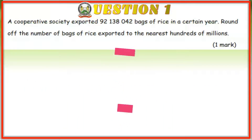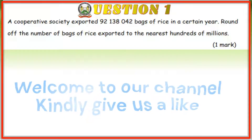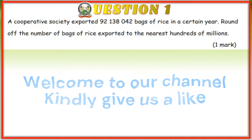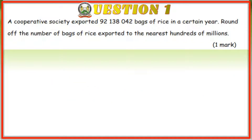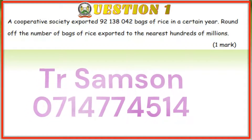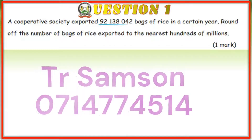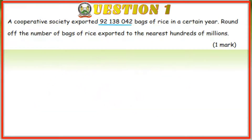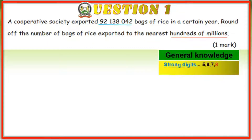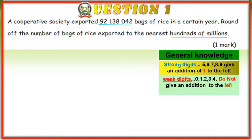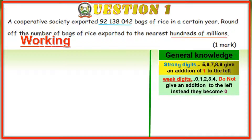Question one: a cooperative society exported 92 million, 138 thousand and 42 bags of rice in a certain year. Round off the number of bags of rice exported to the nearest hundreds of millions. General knowledge: strong digits are 5, 6, 7, 8, 9 — they give an addition of one to the left. Weak digits — 0, 1, 2, 3, 4 — do not give any addition; they just become zero.